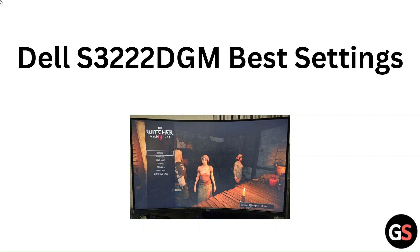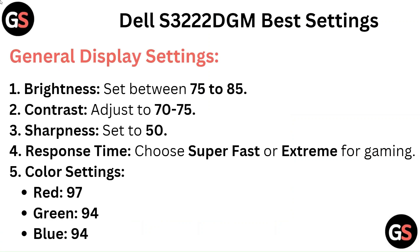Hello everyone. In this video we are going to tell you about Dell S3222 DGM Best Settings. General Display Settings: Brightness set between 75 to 85, Contrast adjust to 70 to 75, Sharpness set to 50, Response Time choose Superfast or Extreme for Gaming.